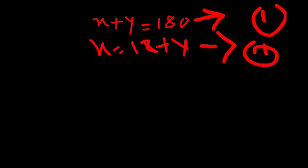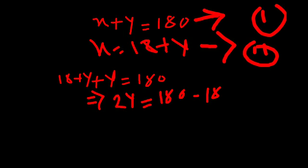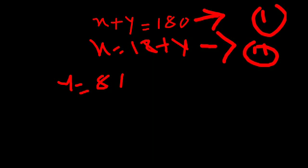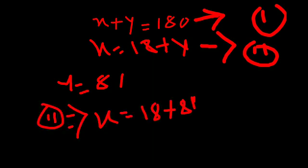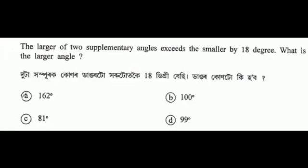Let x + y = 180 degrees. Since x exceeds y by 80, we have x = y + 80. Substituting: y + 80 + y = 180, so 2y = 162, giving y = 81 degrees. Therefore x = 18 + 81 = 99 degrees. The larger angle is 99 degrees.